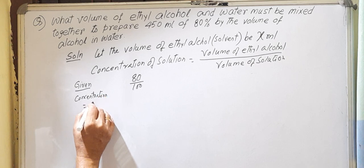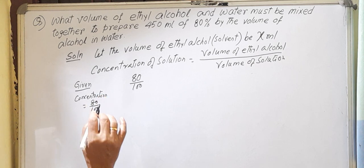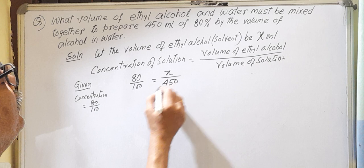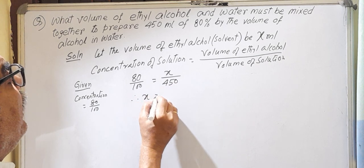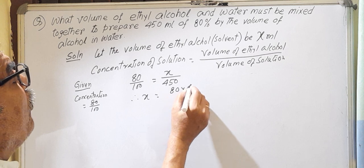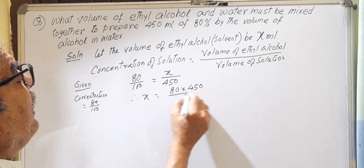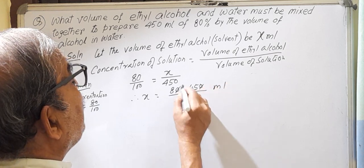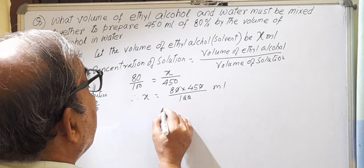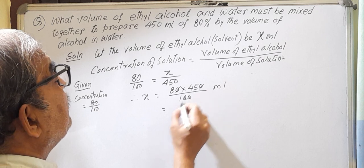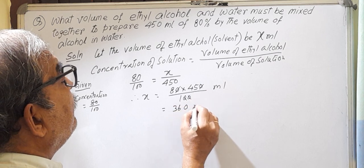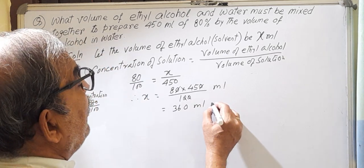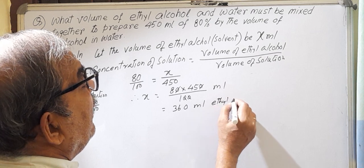Concentration equals 80%. Remember what is given, please write it: equals x by 450. Now therefore x equals 80 into 450 by 100. Zero zero cancel, double zero cancel. That means we get 360 milliliter. 360 milliliter ethyl alcohol, and this is your answer.